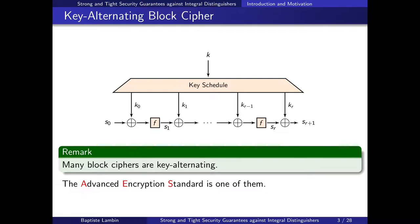One way to do so is to use a key alternating block cipher. Instead of designing the whole set of permutations at once, we first design a round function f and a key schedule. The key schedule takes the key k and derives subkeys k0, k1, through kr. To encrypt, we take the plaintext, add k0, apply the round function f, add k1, apply f again and again until the end to obtain the ciphertext. Most if not all block ciphers today are key alternating block ciphers.